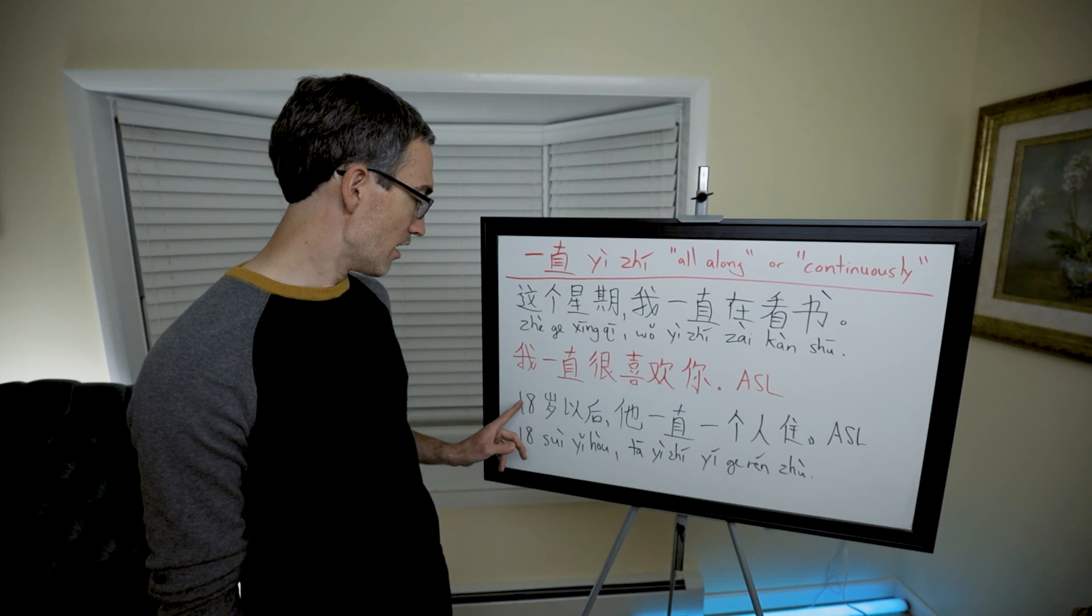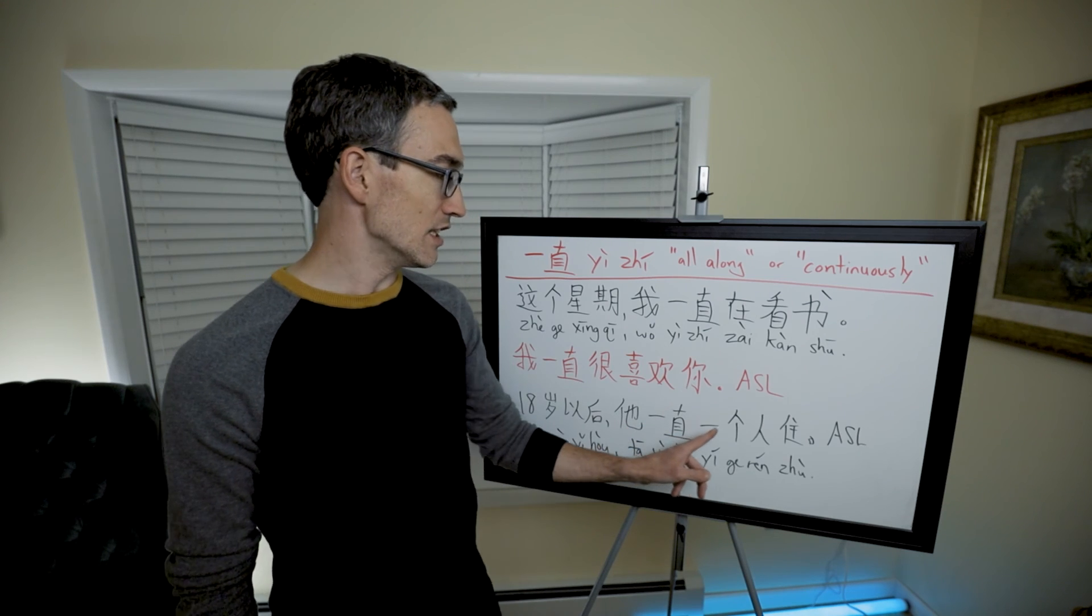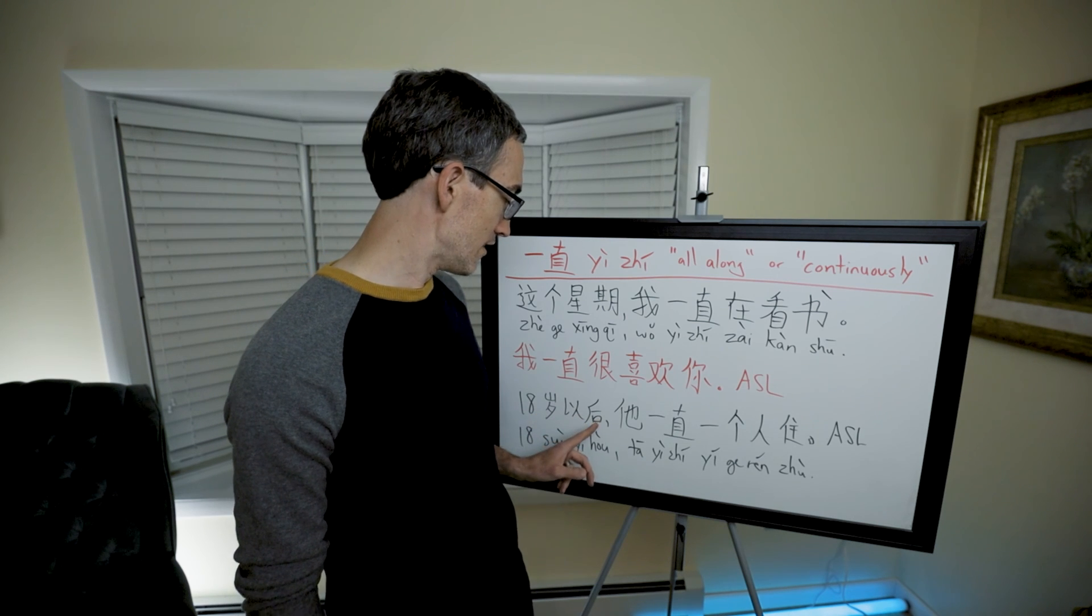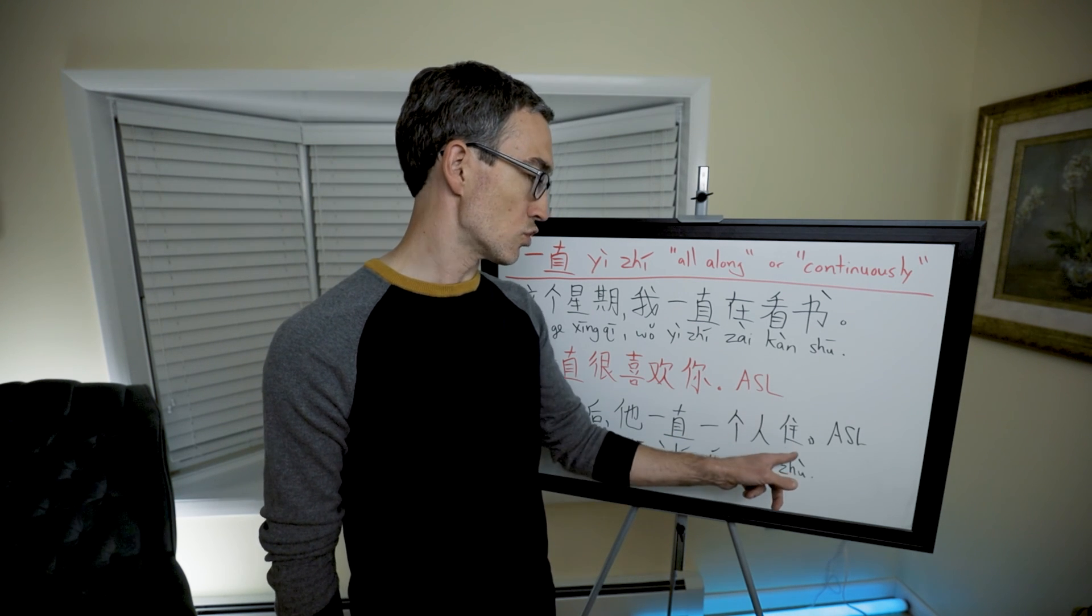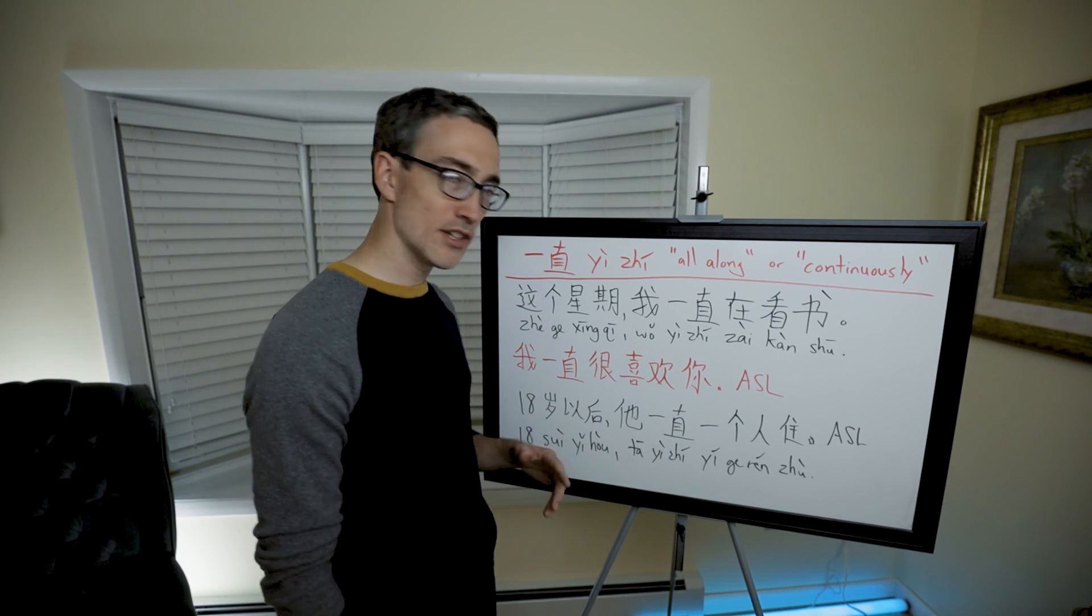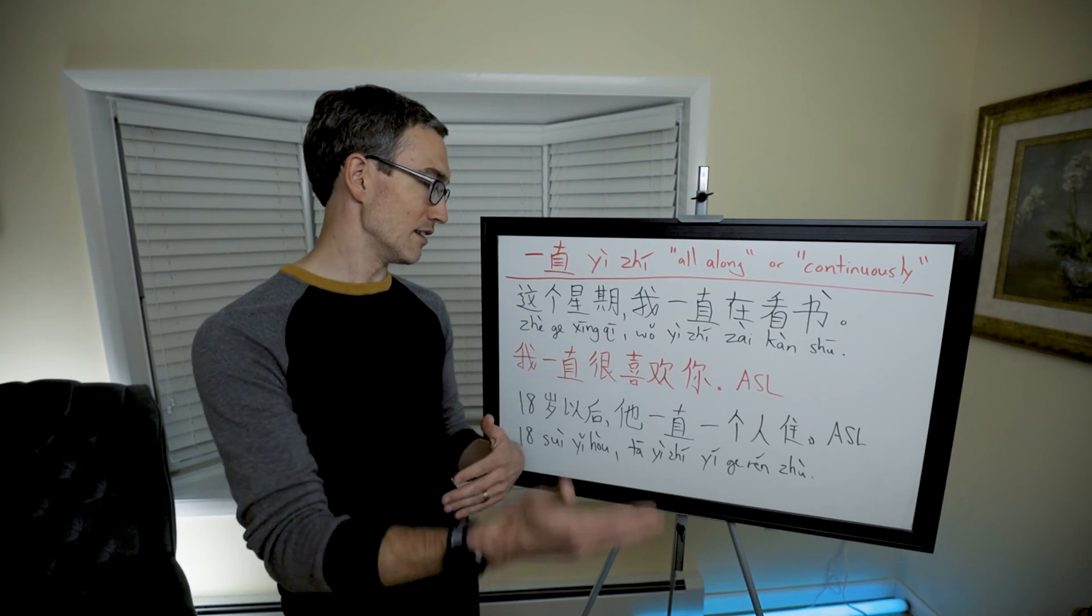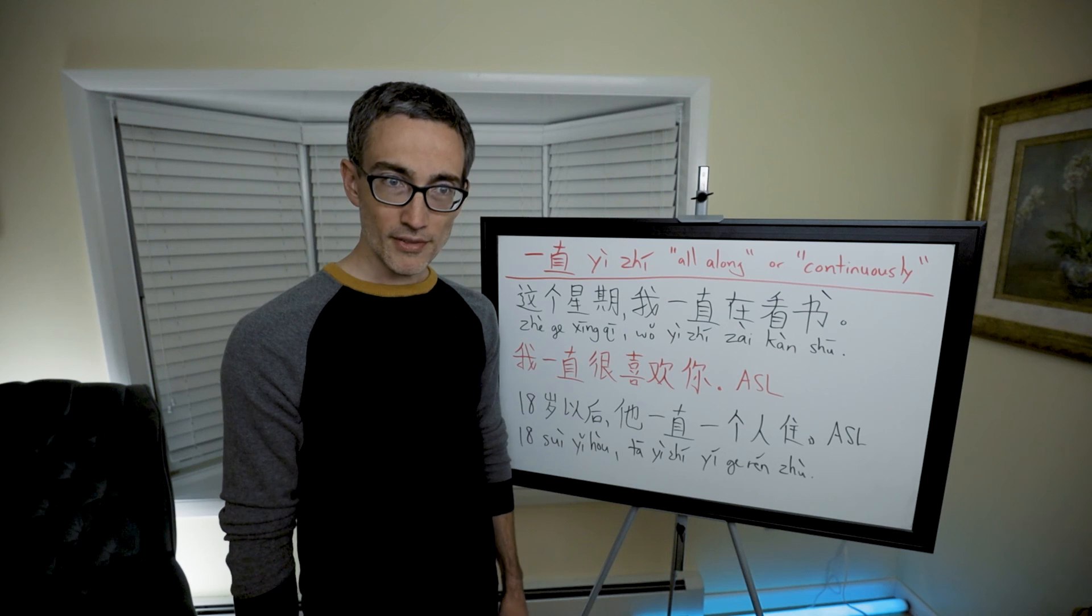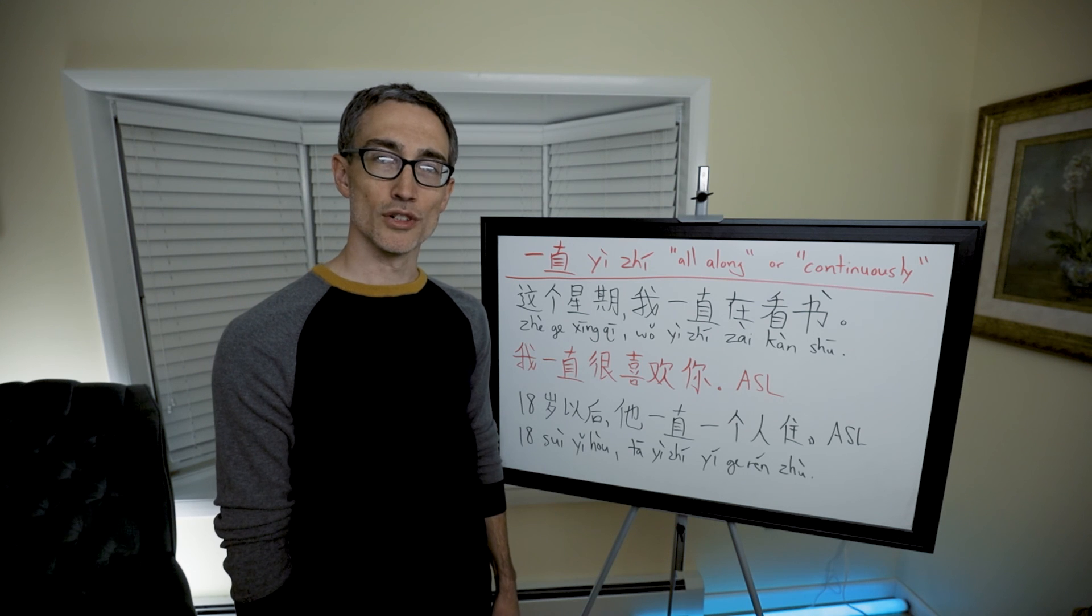十八岁以后, that's after the age of 18, 十八岁以后, 他一直一个人住. Both of these are from Allset Learning, by the way. 十八岁以后, after the 18 years of age, 他一直, all along, 一个人, by himself, 住, lives, has lived. So, or he lived. So after, he lived by himself, he all along lived by himself all along, all from the time, from 18 until some period talking about the future. So there we go. There is 一直, and some different ways to say the English word always.